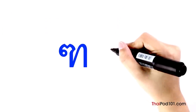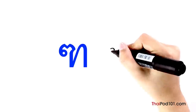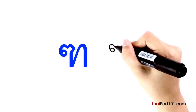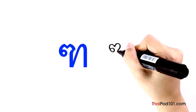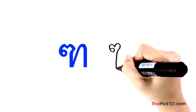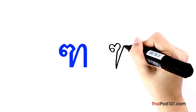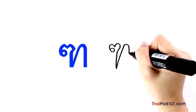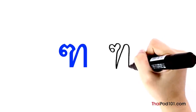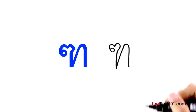Start with a small clockwise head, then make a curved line with an indentation. Draw a line straight down, then come back up and make a hump going to the right side. THO MONTHO.